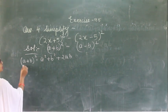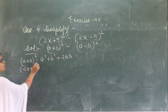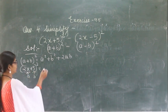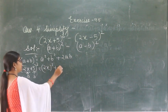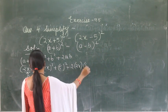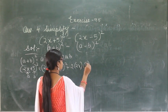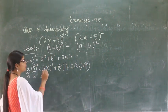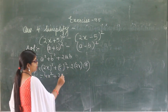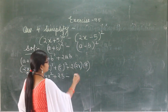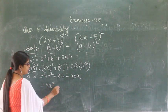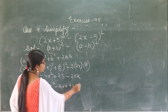Now for (a minus b) whole square — the formula is a square plus b square minus 2ab. Here a is 2x and b is 5. Substituting: (2x) square plus 5 square minus 2 into 2x into 5, giving 4x square plus 25 minus 20x. Now subtracting the second expression from the first: (4x square plus 25 plus 20x) minus (4x square plus 25 minus 20x).